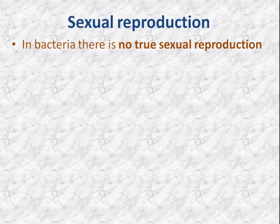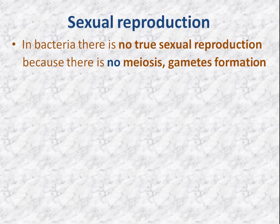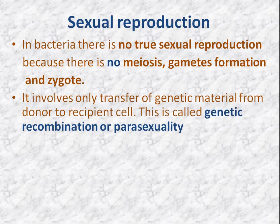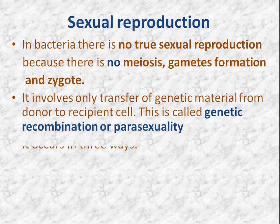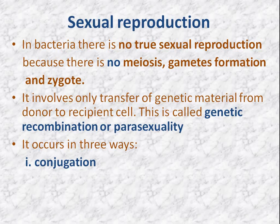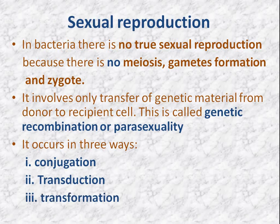Now sexual reproduction. In bacteria there is no true sexual reproduction as there is no meiosis, gamete formation, or zygote formation. But bacterial cells can transfer their genetic material, and this transfer is called genetic recombination or parasexuality. The cell that gives its DNA is called the donor cell, and the cell that receives it is called the recipient cell. Genetic recombination occurs in three ways: conjugation, transduction, and transformation.